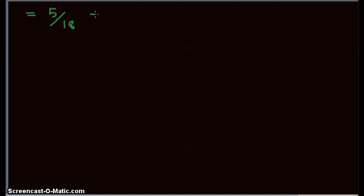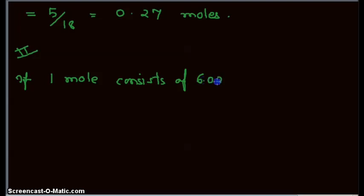So the number of moles in five grams of water is 0.27. Now we know that Avogadro's number is the number of molecules present in one mole of any substance, that is water in this case. So one mole of water consists of 6.022×10²³ molecules.